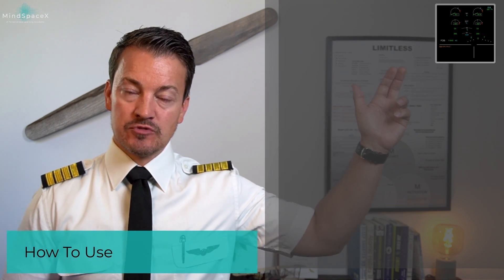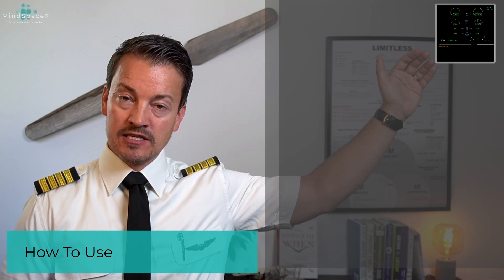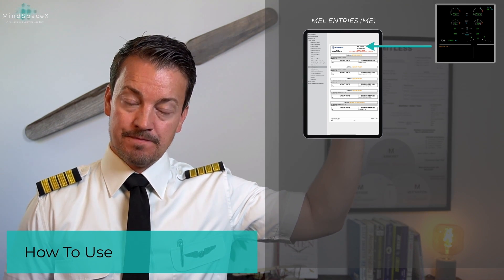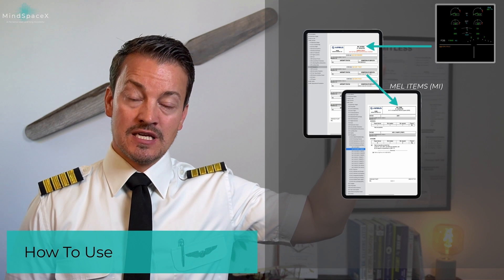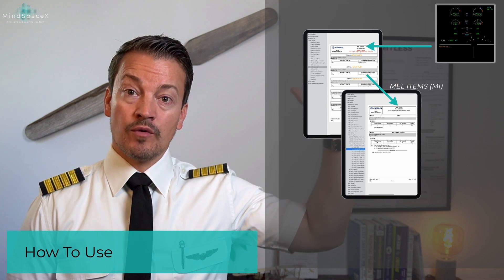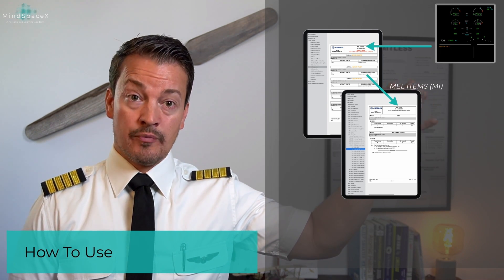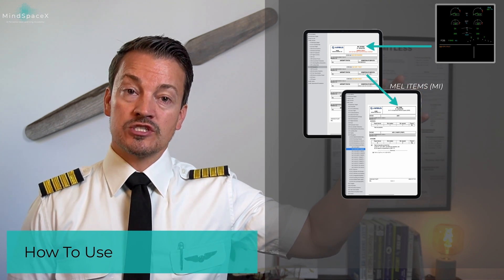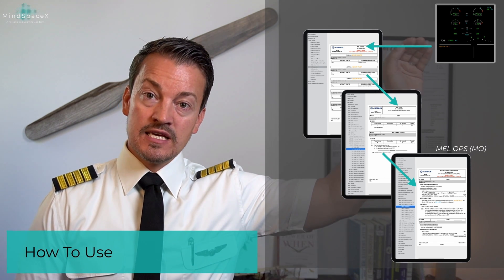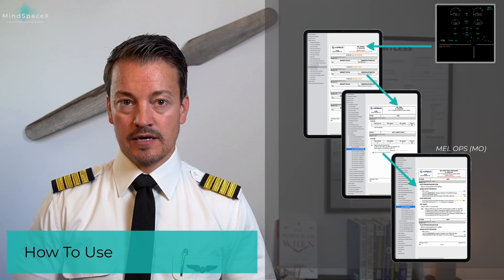If you have a failure triggering an ECAM — a monitored system — you refer to the MEL as part of your decision-making process after completing all ECAM actions. The failure title will refer you directly to the ME chapter, the MEL entries chapter. From there, it may refer you to the faulty item in the MI chapter. If there is no dispatch allowed, it will stop there and state the aircraft is not dispatchable. Otherwise, it will refer you to the MI chapter — the actual MEL — which may then refer you to the MO operational procedures chapter if anything needs to be done maintenance- or operations-wise before dispatch.